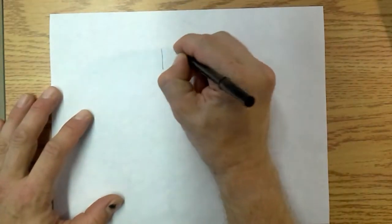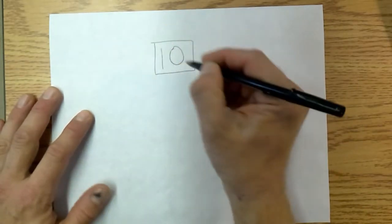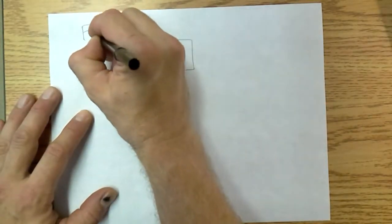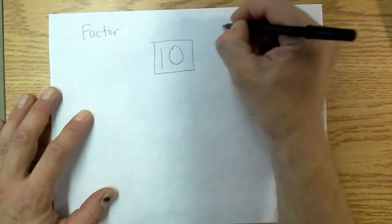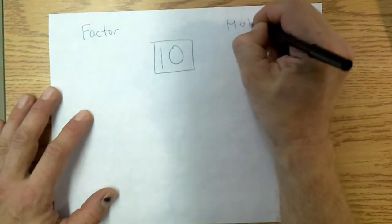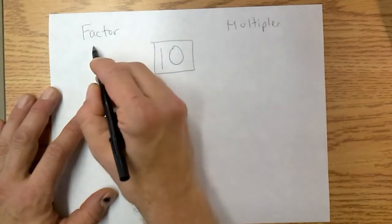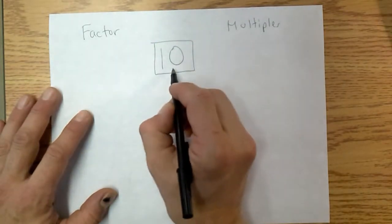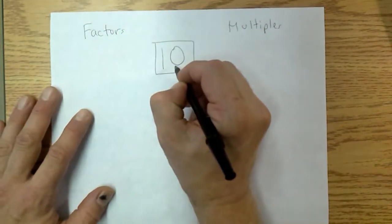Let's take a look at the number 10 for example. So when we're looking at a factor and a multiple, we are asking what are the factors or the multiples of a particular number. So in this case, 10.